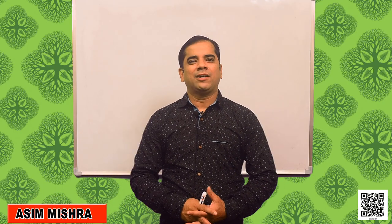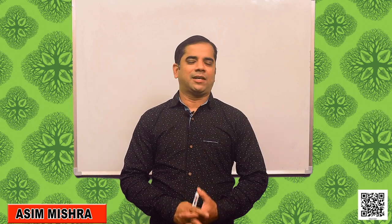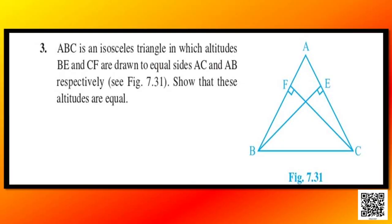Hello students, welcome back to another session of math class. In our previous class we discussed the isosceles triangle and were continuing with Exercise 7.2. Let us continue with the other sums. We will start with sum number 3: ABC is an isosceles triangle in which altitudes BE and CF are drawn to equal sides AC and AB respectively. Show that these altitudes are equal.